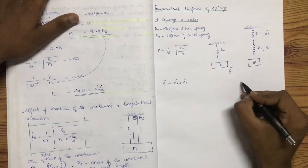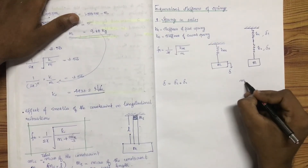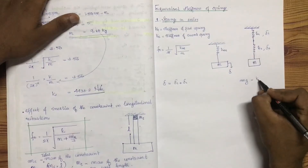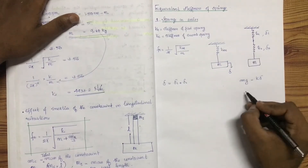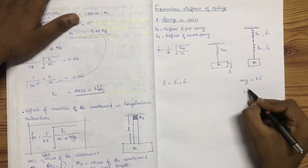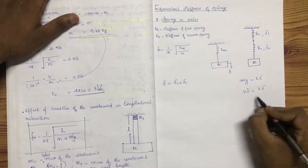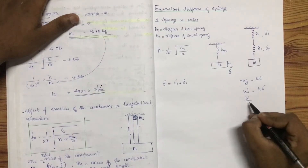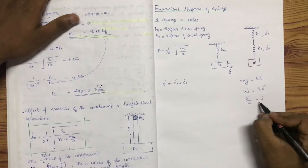Let's do the equation for delta. We have W equals K times delta. So delta equals W divided by K.